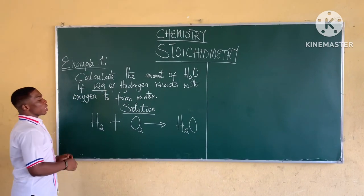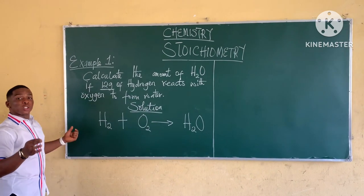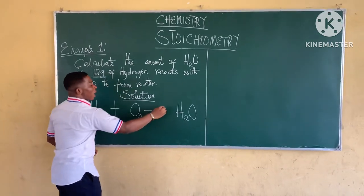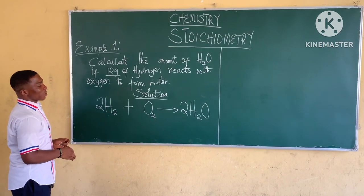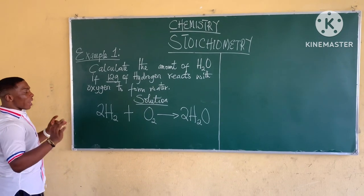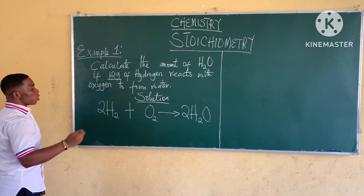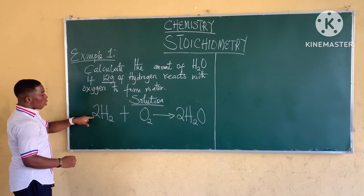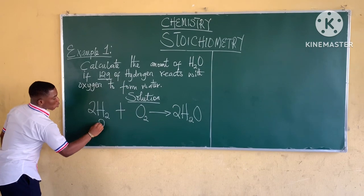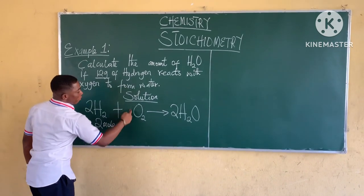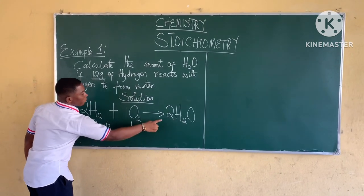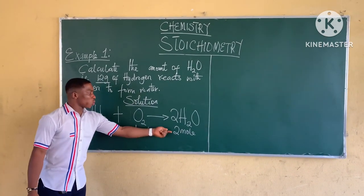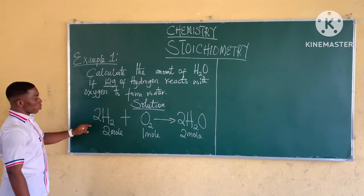Water is H₂O. In stoichiometry, the first thing to do is to balance the equation of reaction. To balance this equation, you add 2 to hydrogen and you add 2 to water. Now the equation of reaction is balanced. After balancing the equation of reaction, the next thing is to write out the mole ratio. The mole ratio is just the coefficient of each atom or compound in the reaction. The mole ratio of H₂ is 2 moles, for O₂ the coefficient is 1, so 1 mole, and for water this is 2 moles. So the mole ratio is 2:1:2.